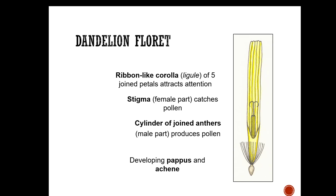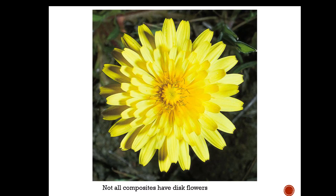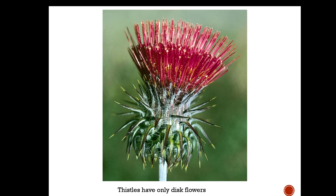Dandelions are made only of ray flowers. Here is a ribbon-like corolla or ligule — you can see it has a stigma that catches the pollen, joined anthers that produce the pollen, a developing pappus, and an achene, which is a type of fruit. This is why dandelions are so successful: they have tufts of hair (the pappus) that the wind picks up, a needle-like beak that supports them so they stand up, and an achene with spines that help it stick to the soil.